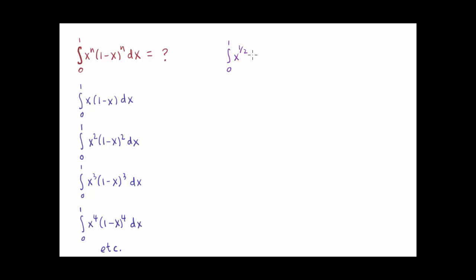So, if we integrate x to the one-half times one minus x to the one-half with respect to x from zero to one, we get something nifty. The powers can be interpreted as square roots, and the square roots combine to give us the square root of x minus x squared.